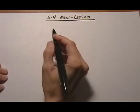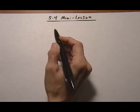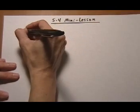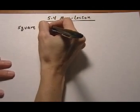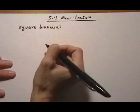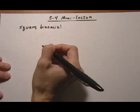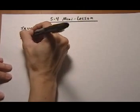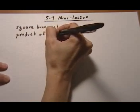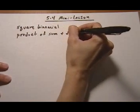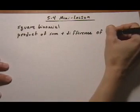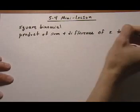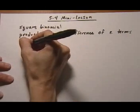We want to look at three different things: squaring a binomial, the product of a sum and difference of two terms, and how to cube a binomial.